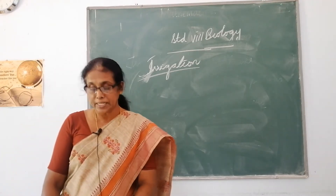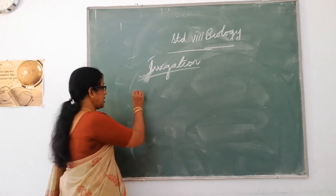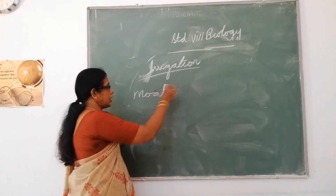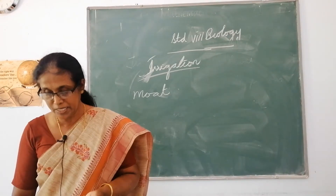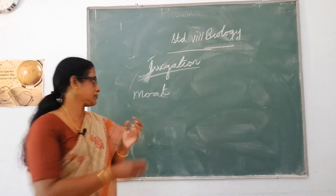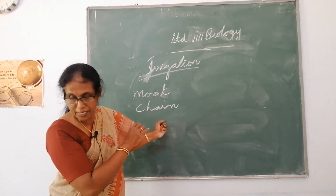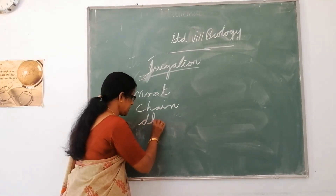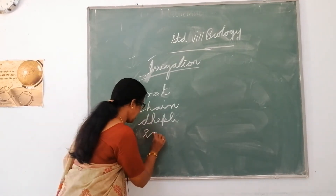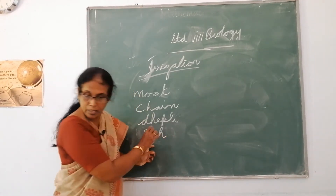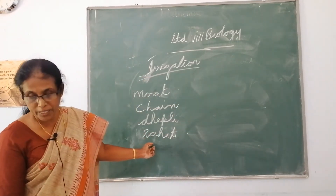The traditional methods of irrigation are various. Have you seen the pulley system? In your home, sometimes you pull water from a well — that is the pulley system. Then there is the chain system. The next one is the dhekli (D-H-E-K-L-I), and then the rahat (R-A-H-A-T), which is the lever system. These are the traditional ways of irrigation.